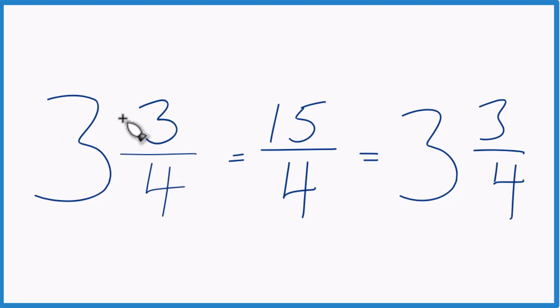So in answer to our question, the mixed number 3 and 3 fourths equals the improper fraction 15 fourths. Thanks for watching.